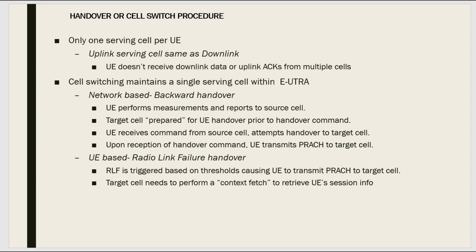During backward handover, or network-based handover, this is a traditional handover where the UE performs measurement reports and periodically transmits them to the eNodeB or the serving cell, which we call the source cell. The serving cell then takes a decision based upon these measurement reports and informs the target cell, making the target cell prepared for the UE handover. The serving cell then gives the handover command to the UE, and the UE attempts the handover to the target cell via PRACH.